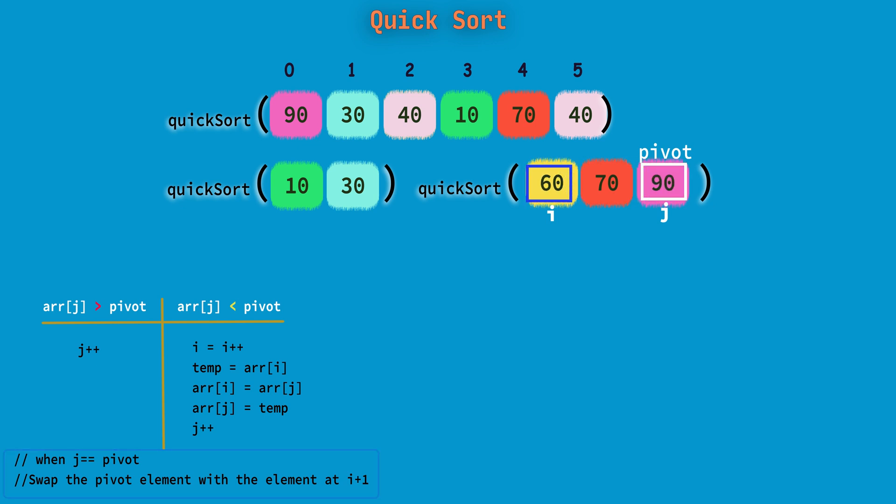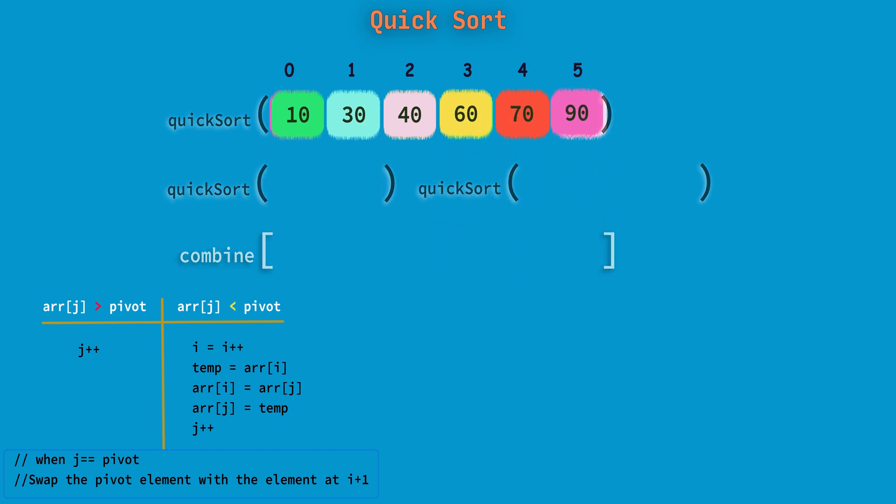So these recursive steps still continue with the same process. Here I am not showing all the remaining QuickSort recursive steps as they are same. So after completing all the recursions with QuickSort on all the partitions, we need to combine those partitions to get the resultant array which is an expected and sorted array.